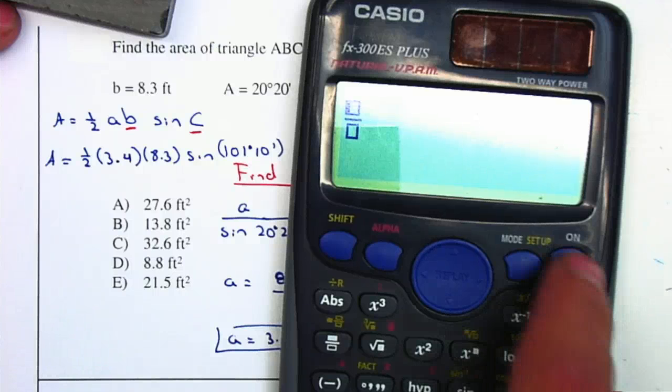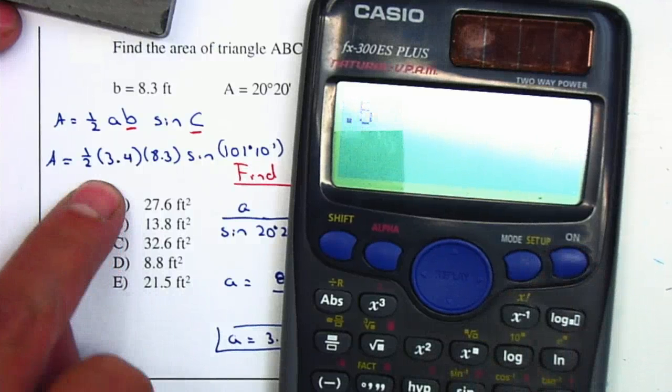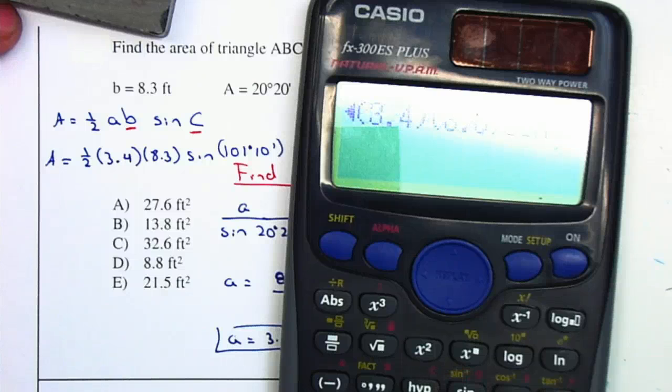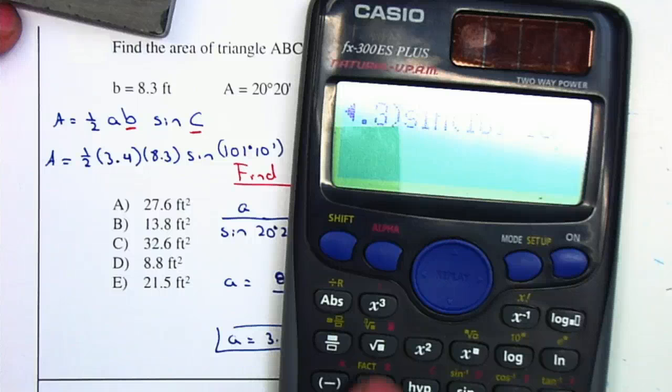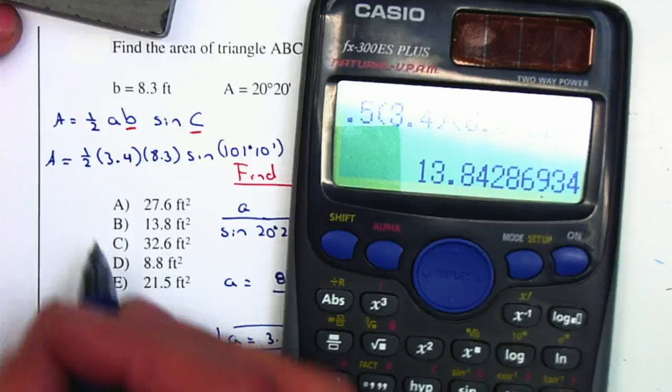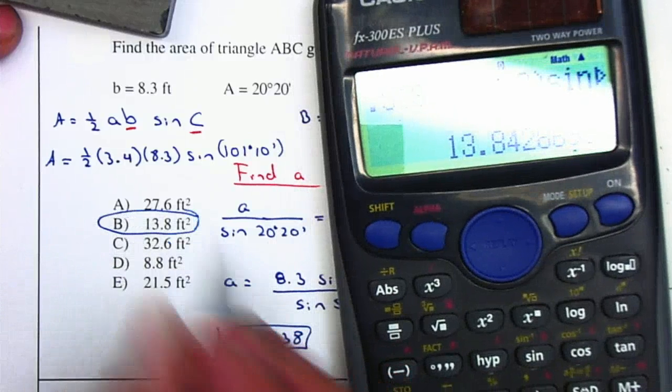I'm going to type that into the calculator: 0.5 for the one half, multiply by 3.4, multiply by 8.3, multiply by sine of 101 degrees 10 minutes. The area will be 13.8, so my answer is letter B.